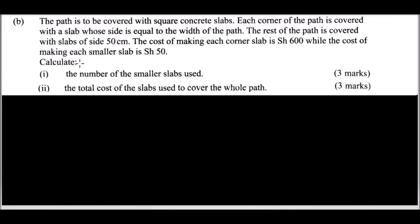Part b of question 17: We are told the path is covered with square concrete slabs. Each corner of the path is covered with a slab whose size equals the width of the path. The rest of the path is covered with slabs of 50 centimeters. The cost of each corner slab is 600 shillings and each smaller slab is 50 shillings. Calculate the number of slabs used and the total cost to cover the whole path.